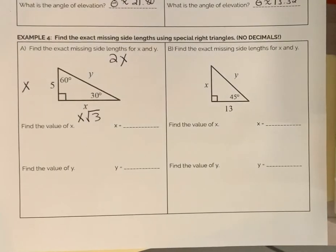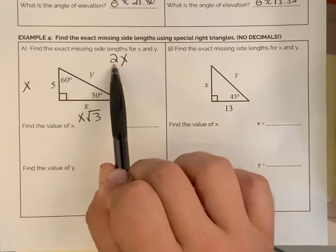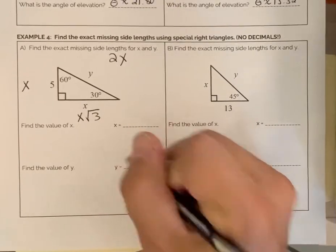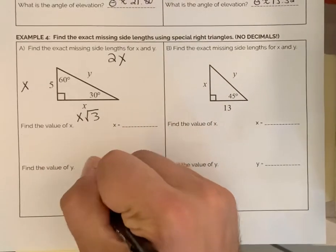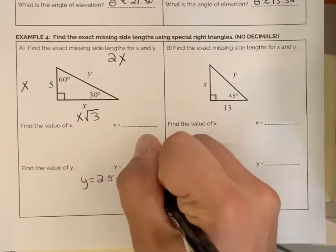In looking at that, if this side is 5, y is equal to 2 times x. So y is equal to 2 times 5, which of course is just 10.